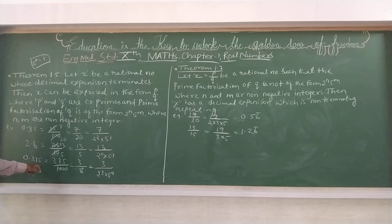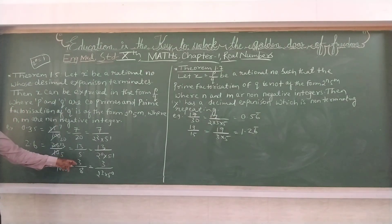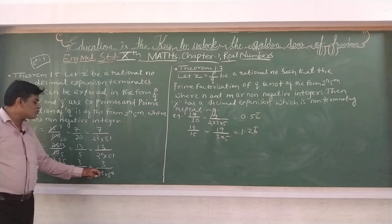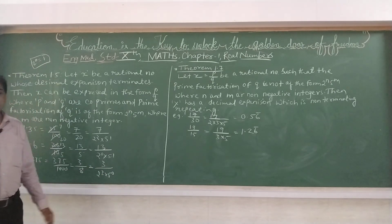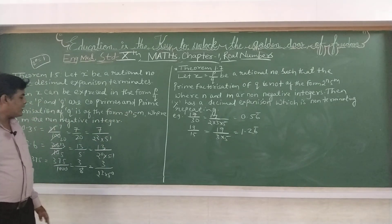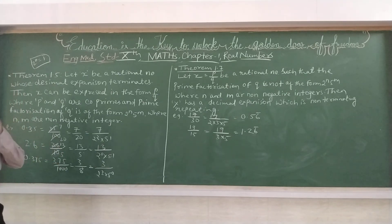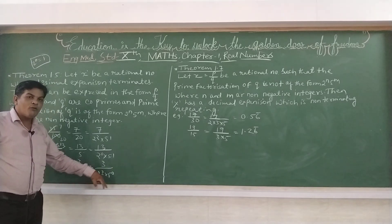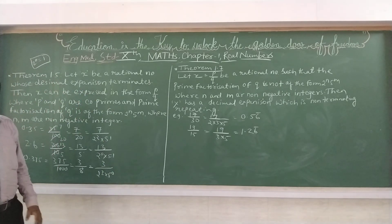Next, 0.375. 0.375 means 375 divided by 1000. Then isko reduce karenge to 3 upon 8, and 3 upon 8 means 3 upon 2^3 and 5^0. To yahan par bhi 2^n and 5^m form mein aa gaya. Students, is theorem 1.5 se hum conclude karte hain ki kisi bhi number ka denominator agar 2^n aur 5^m form mein hota hai to wo terminating decimal number hota hai.